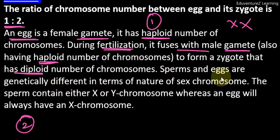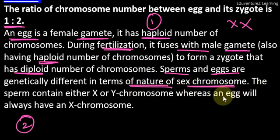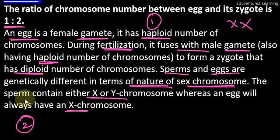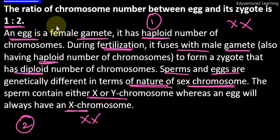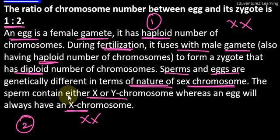Sperms and eggs are genetically different. The difference is in their sex chromosomes. The sperm contains either an X or a Y chromosome, whereas the egg only has an X chromosome. So the genetic difference is that sperms carry X and Y chromosomes, while eggs carry only X and X. Therefore, the ratio of chromosome number between an egg and its zygote is 1 is to 2.